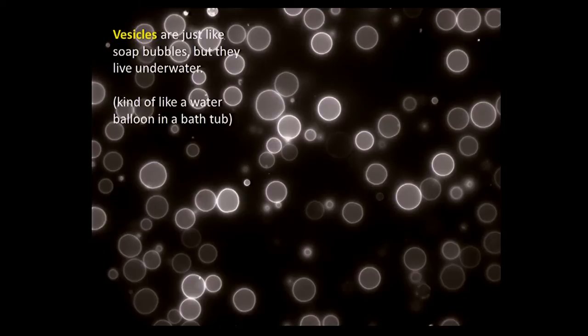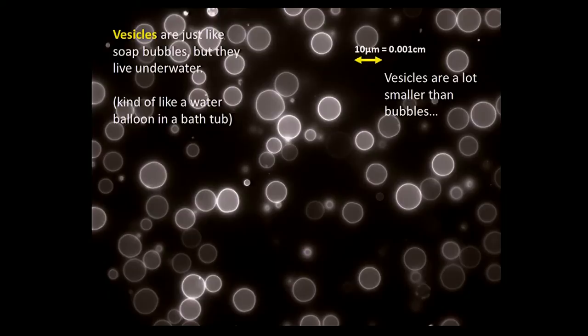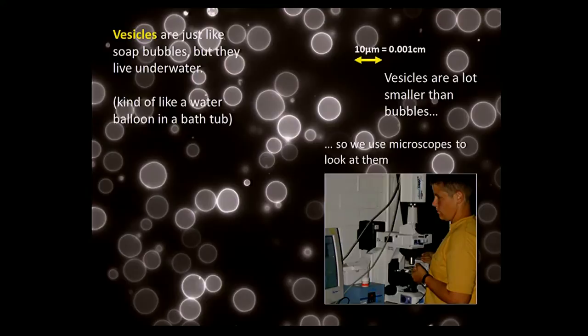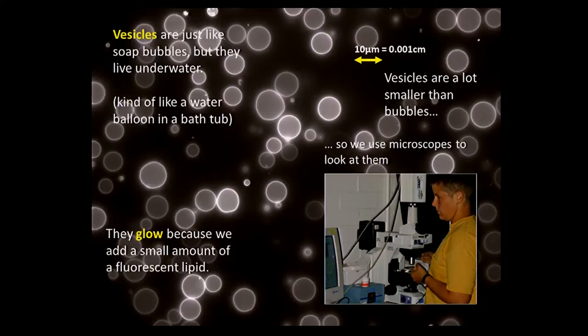These are vesicles — spherical membranes similar to our bubbles, but they're underwater. Think of a water balloon in a bathtub. In most cases they're much smaller than the bubbles we encounter in our normal lives, probably because without the layer of oil they're a little more fragile. Because they're smaller, we have to look at them under microscopes. The reason they're glowing in the picture is that we've added a small amount of a fluorescent dye — a molecule that glows under a particular color of light — which lets us see them at high contrast in our microscopes.